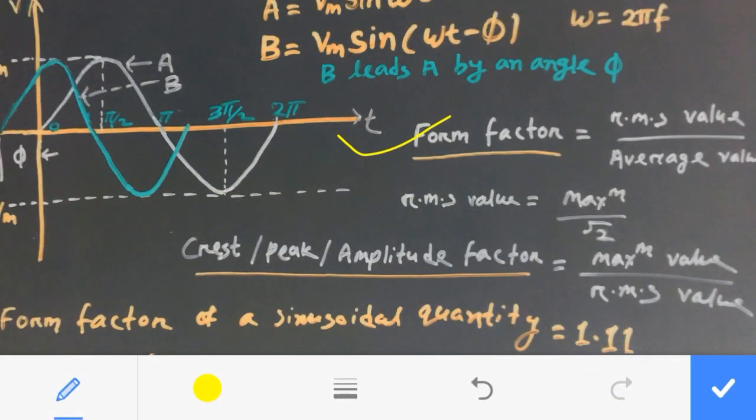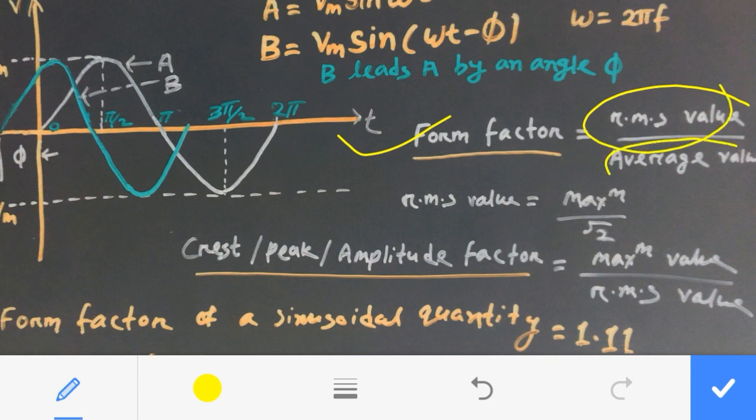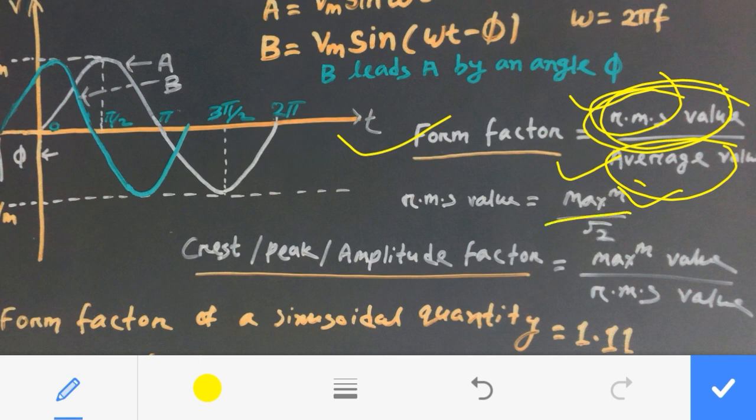Form factor is given by RMS value to average value. That is the ratio of RMS value to average value. RMS value is the root mean square value. The RMS value can be found by the maximum value divided by root 2.